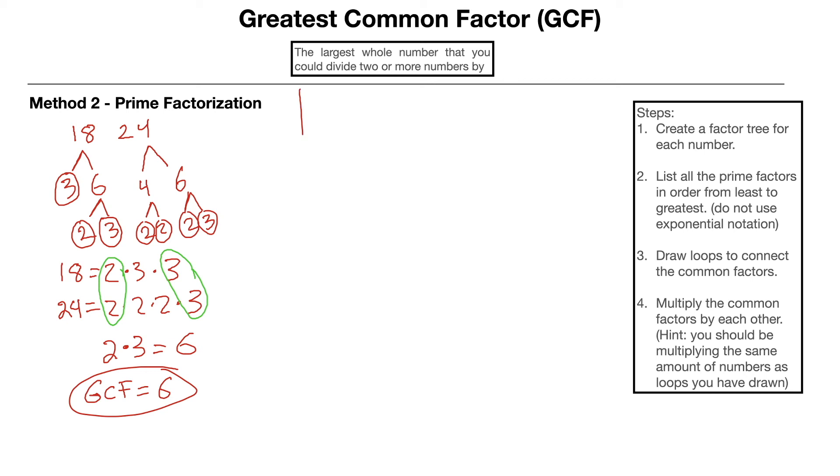So 6 is the biggest number that is a factor of both 18 and 24. We'll do one more quick example. I'm just going to draw a line right here. Let's say we had the numbers 28 and 42. I'm going to start by making a factor tree for each number to get the prime factorization.